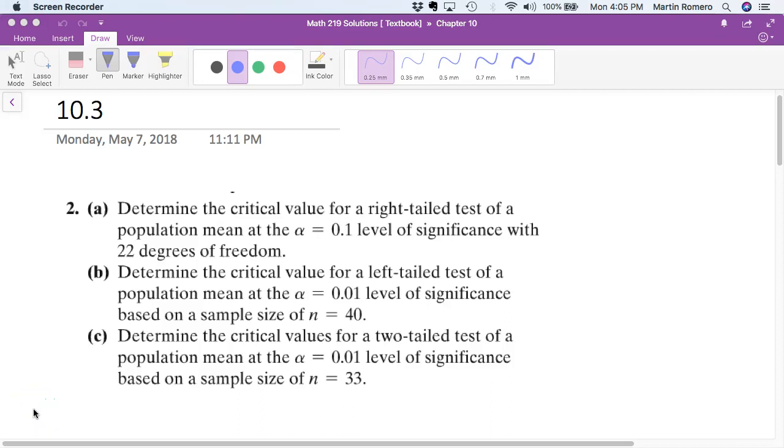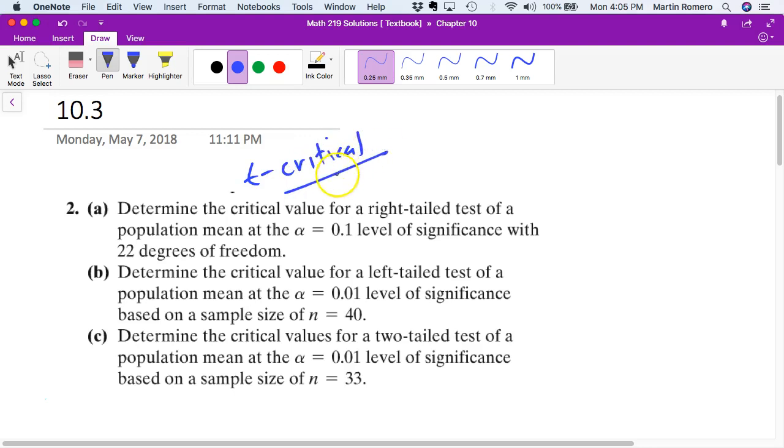This video is for the written homework solutions for Chapter 10.3, hypothesis tests for population means. First problem, problem number two is just the idea of determining a critical value like we've done before. This time though we're not using a Z critical or a normal calculator. In this case we need to calculate a critical value, but we're looking for a T critical. T critical value, and the way we're going to do that is through a T calculator.